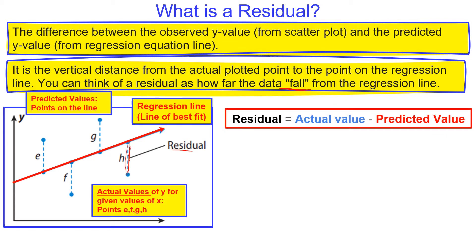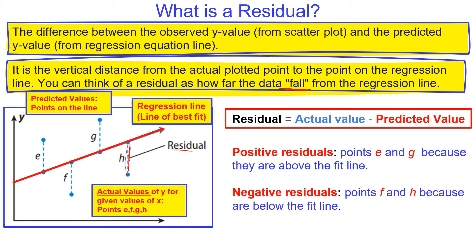The equation we use is: actual value minus the predicted value. When you have a positive residual, the points are above the line of regression or line of best fit. If you have negative residuals, the points are below the line of best fit or the regression line.